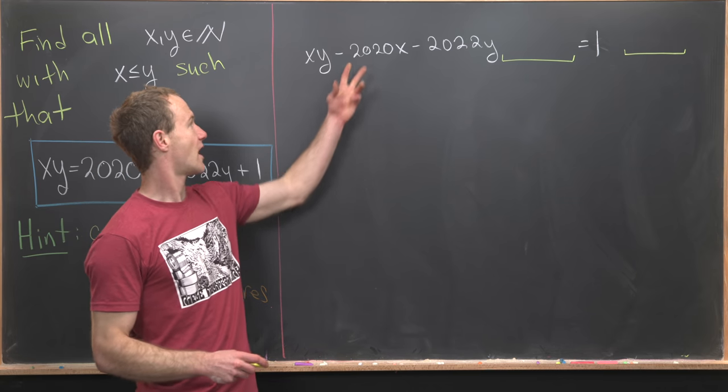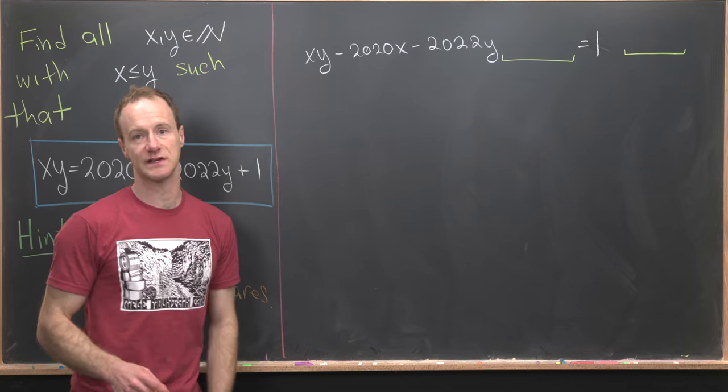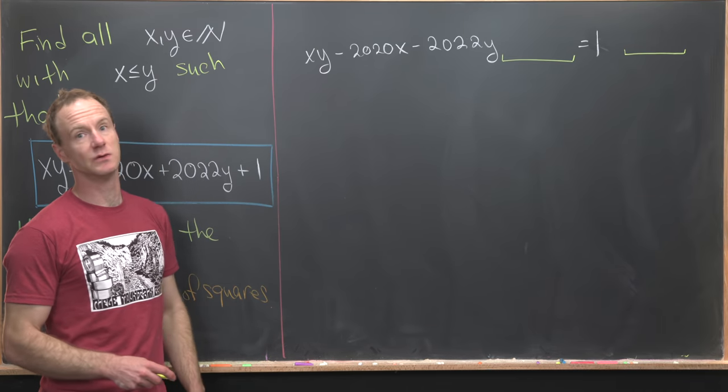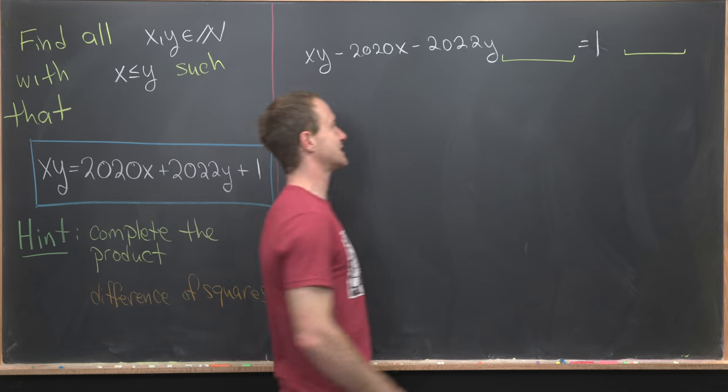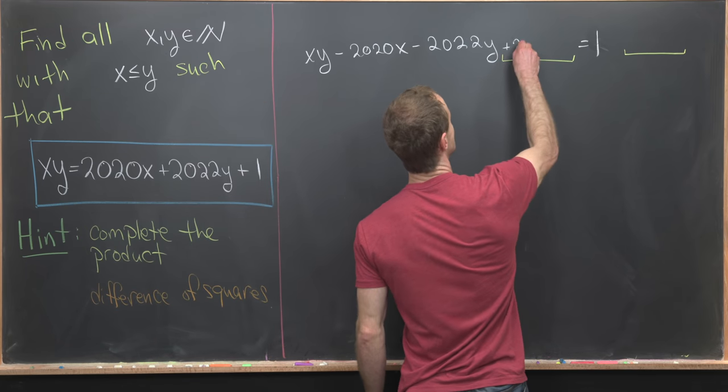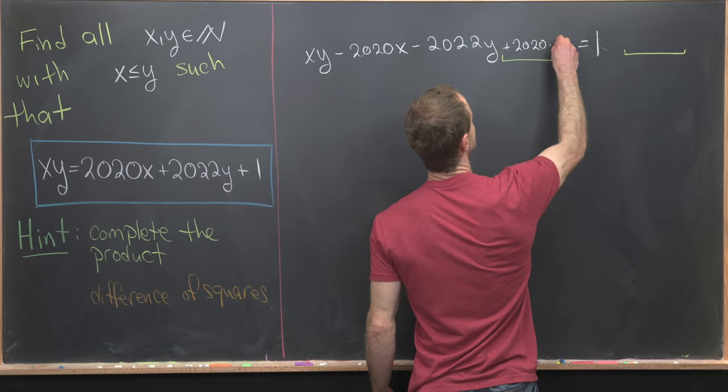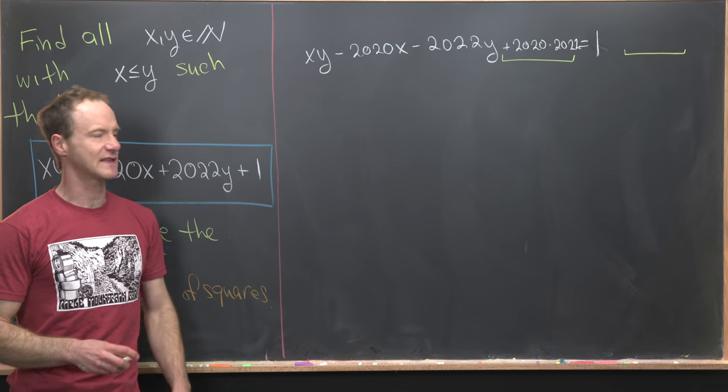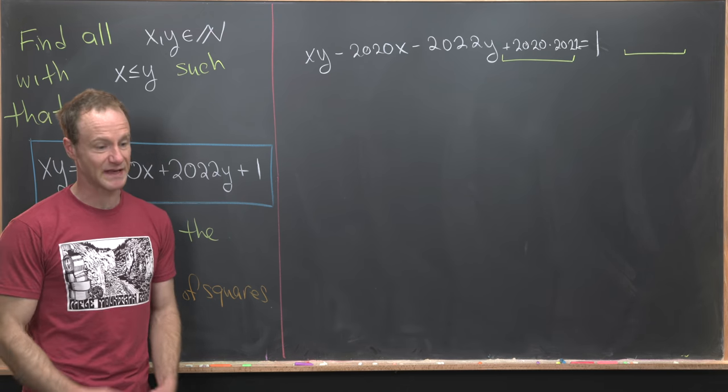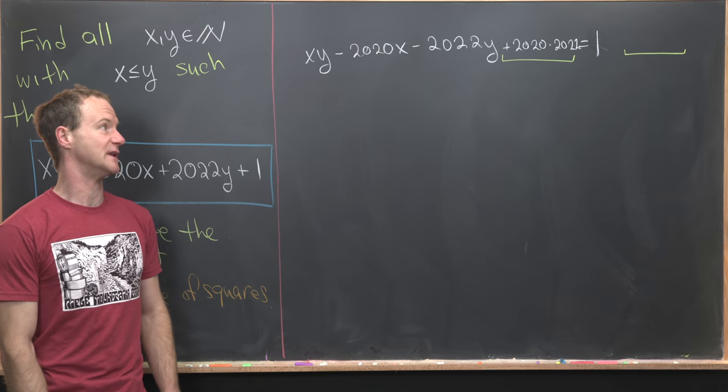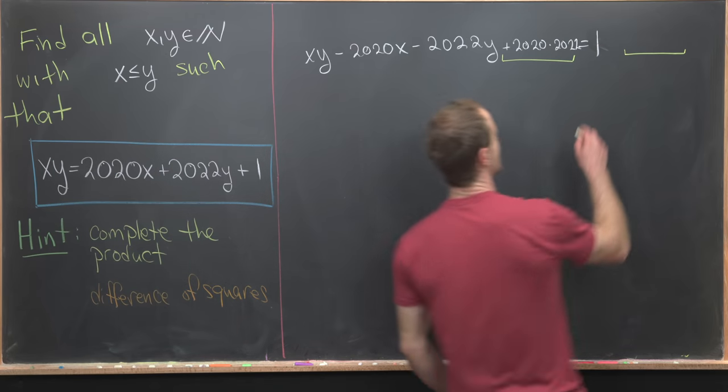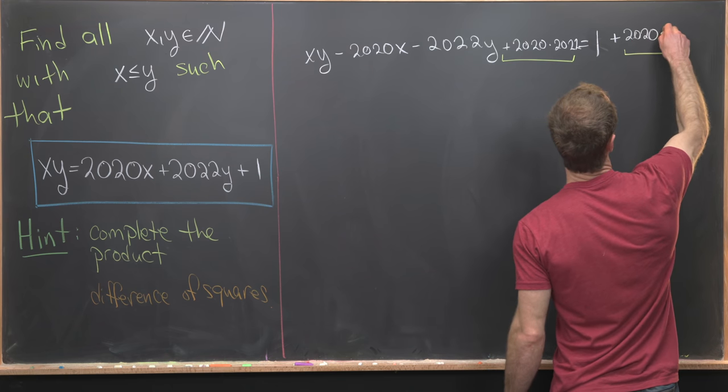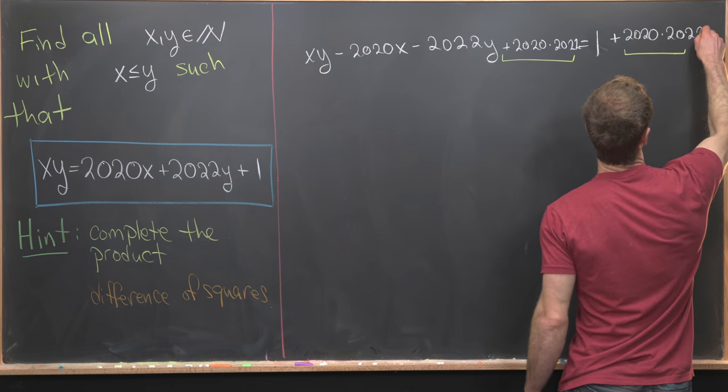So looking at this a little bit, you'll see that in order to complete the product, we will need to add the product of -2020 with -2022. But obviously, the minus signs cancel. So that means we need to add 2020×2022. We're actually going to leave it like that instead of multiplying it all out because having that structure will be helpful. And then that means we have to add it on the other side of the equation as well. So 2020×2022.